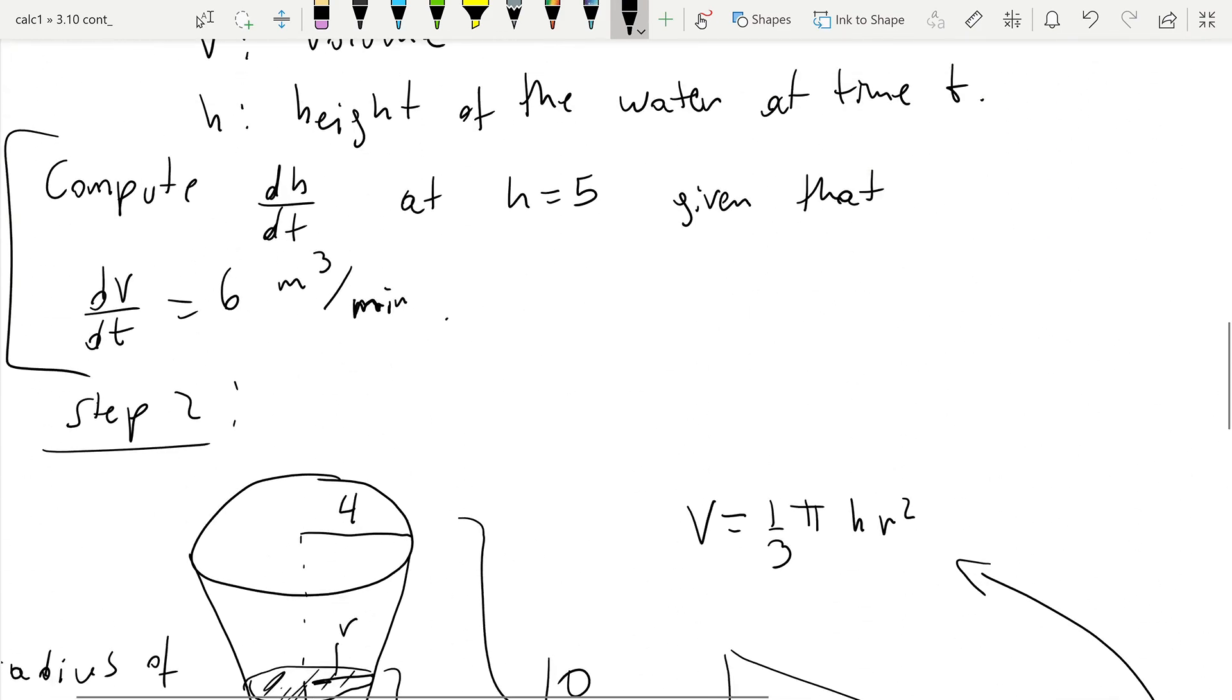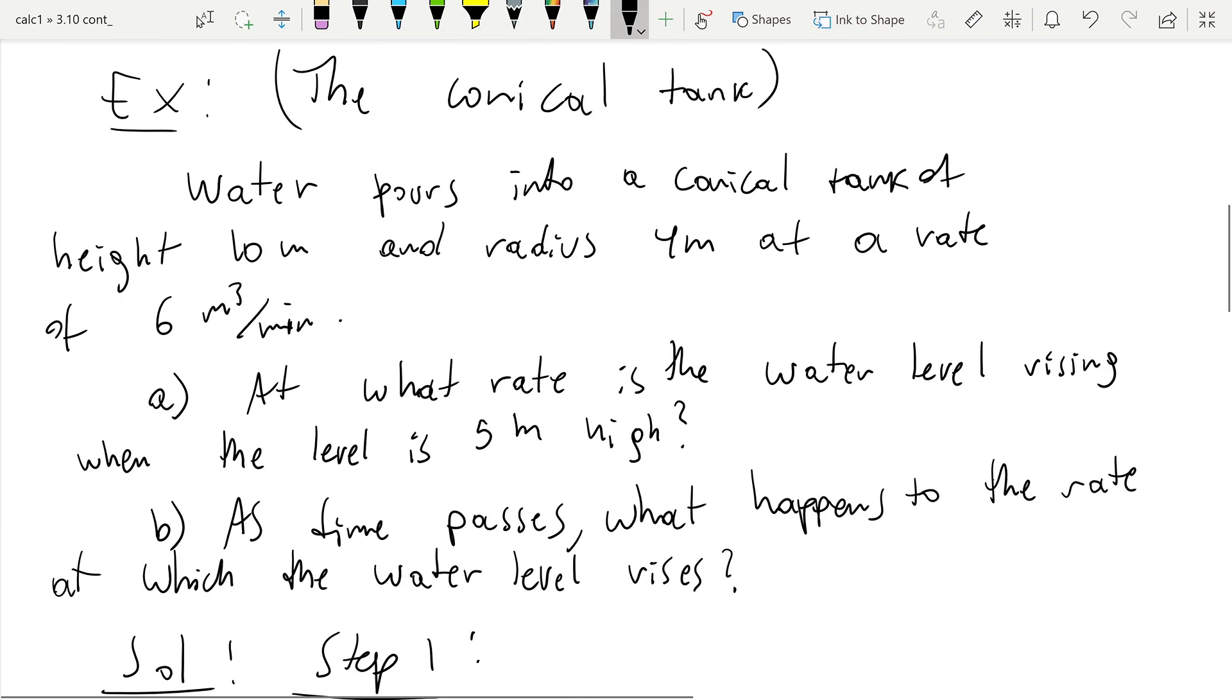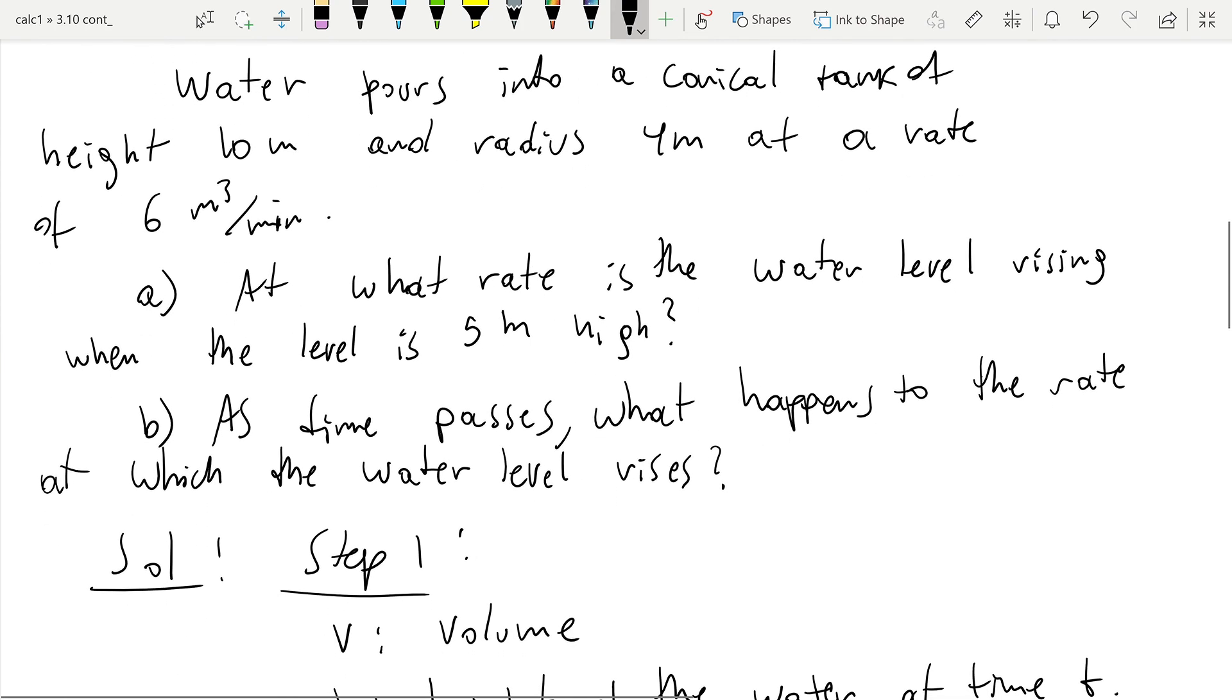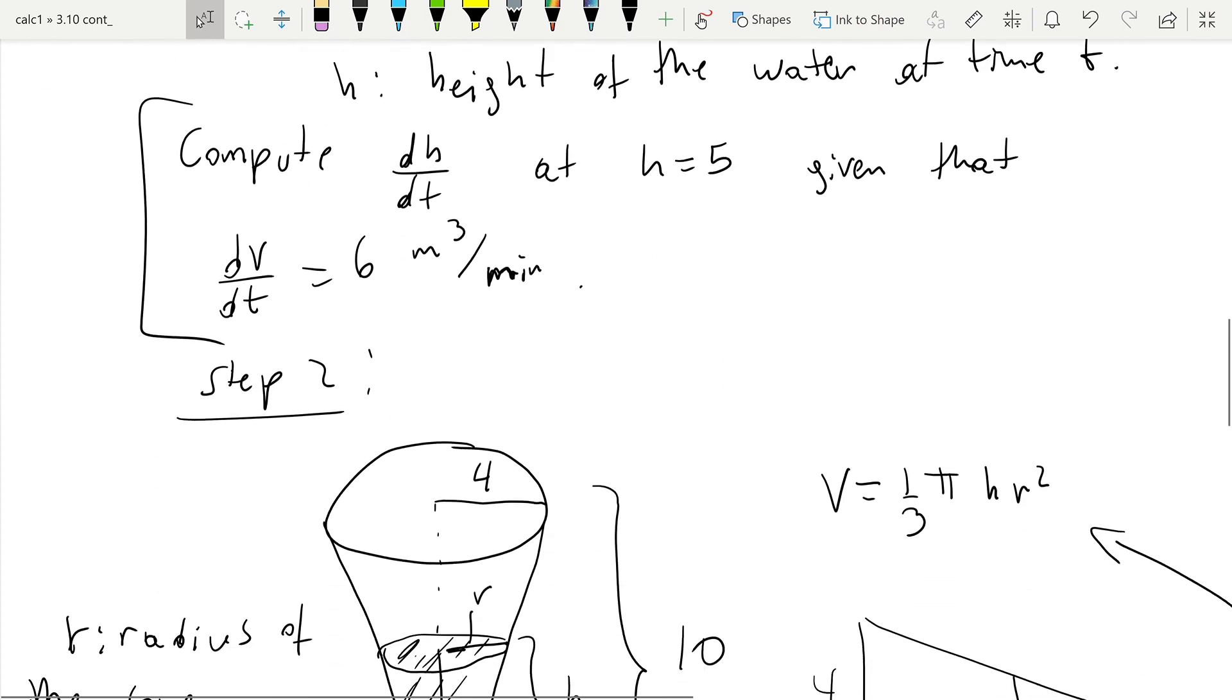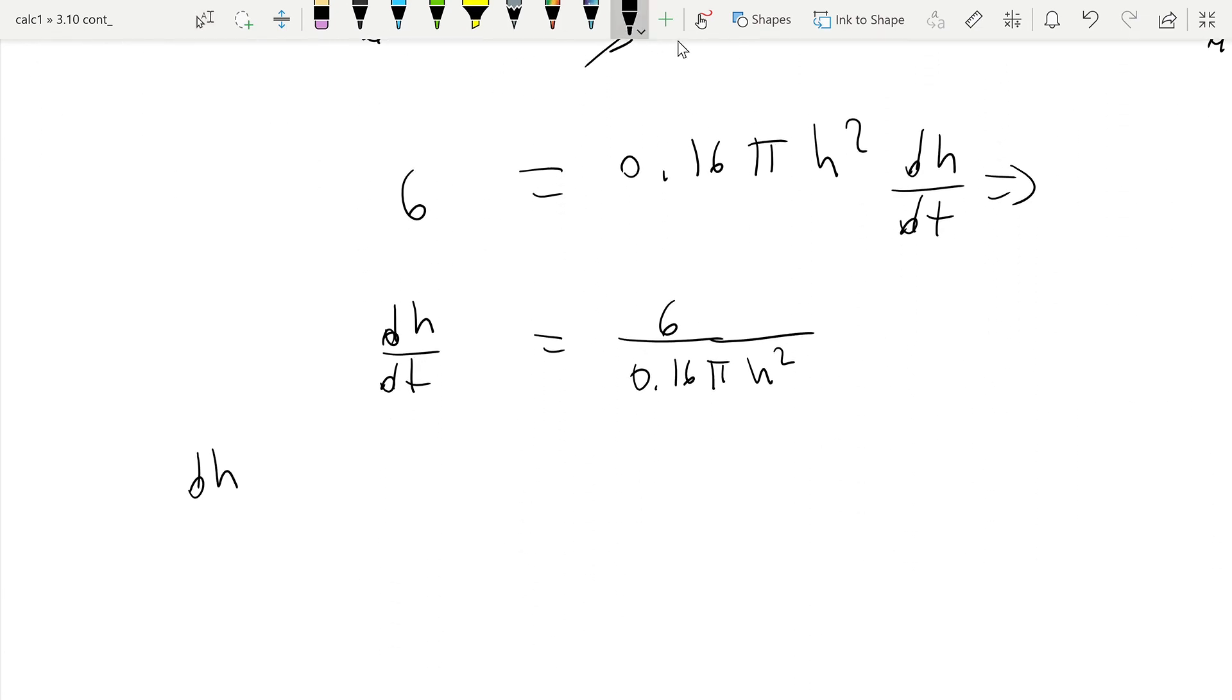We can go back to the problem. We were asked to find the rate at which the water level was rising when the level was 5 meters high. So here we want to find dH/dt when H equals 5. When H equals 5, we get 6 divided by 0.16 π, and H equals 5, so we have 5 squared which is 25. So this answers the first part of the problem. If you want an approximation, this is 0.48 meters per minute.